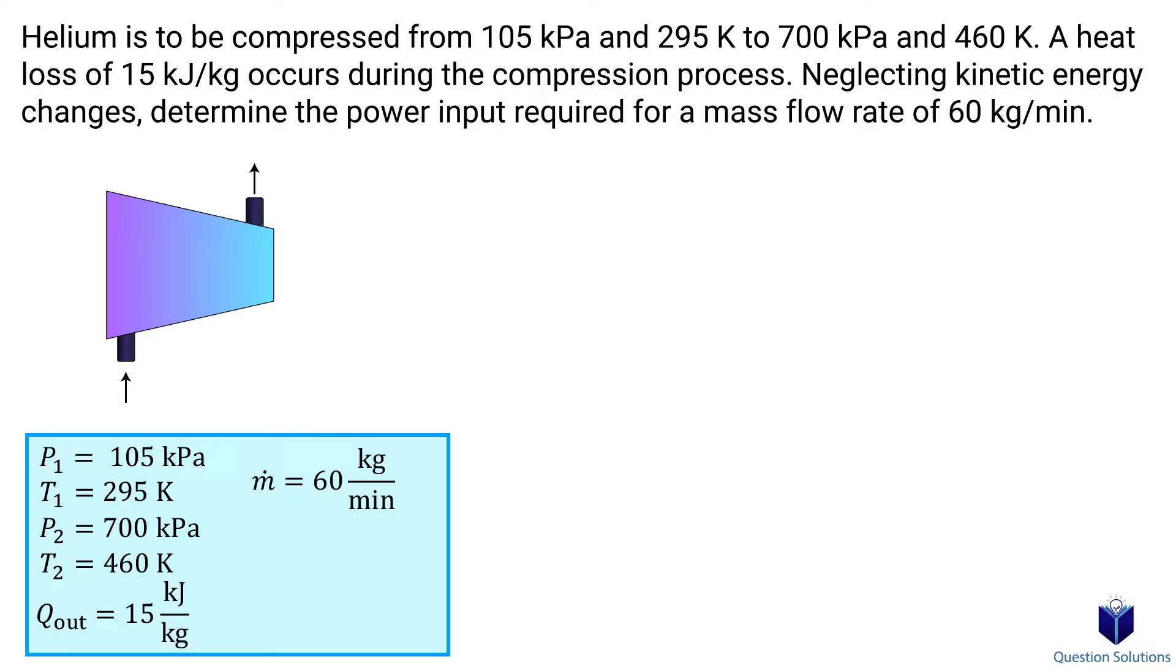We have a slight problem, which is the heat loss and mass flow. We need these in terms we can work with. In other words, we need these values to be flow rates that are given with respect to seconds. Mass flow is easy to figure out, we just divide it by 60 and we get it per second. Now we are told that 15 kJ of energy is lost per every kg of helium. And we also know that 1 kg of helium passes through this compressor each second. So that means our heat loss is 15 kJ per second.